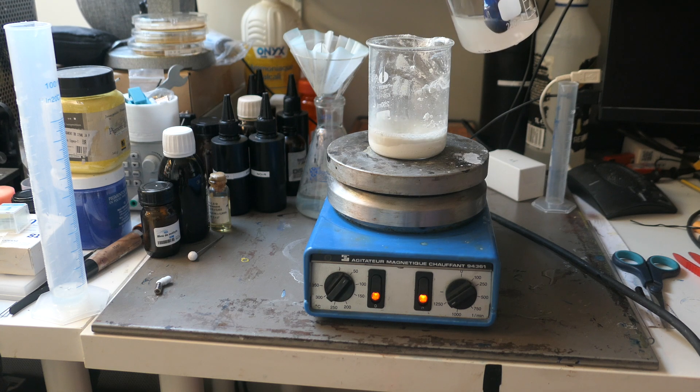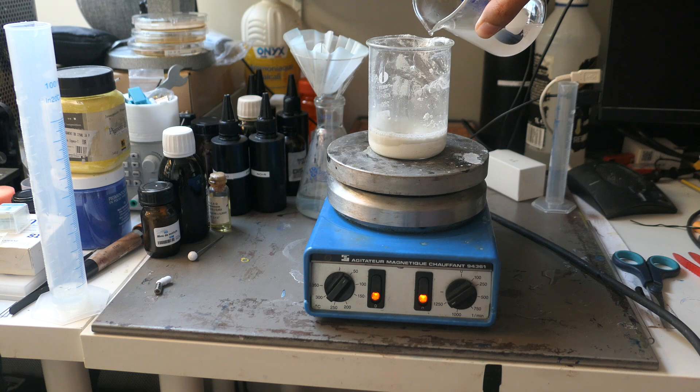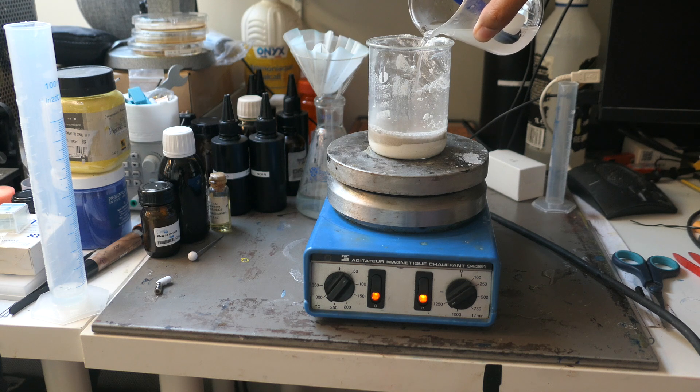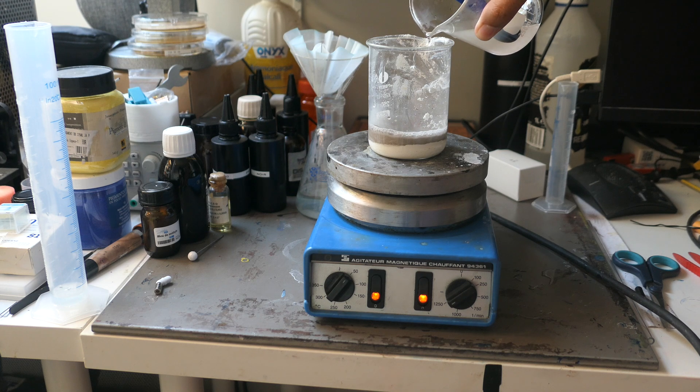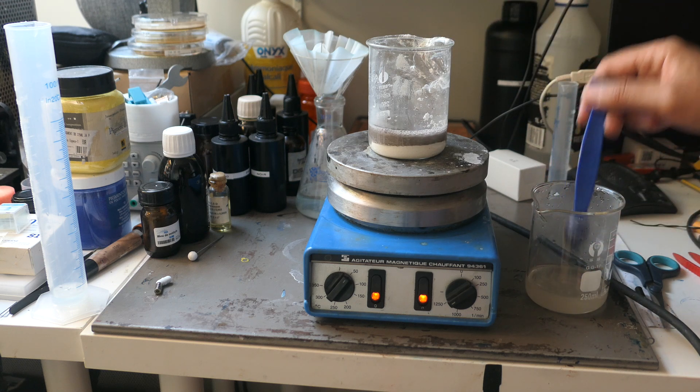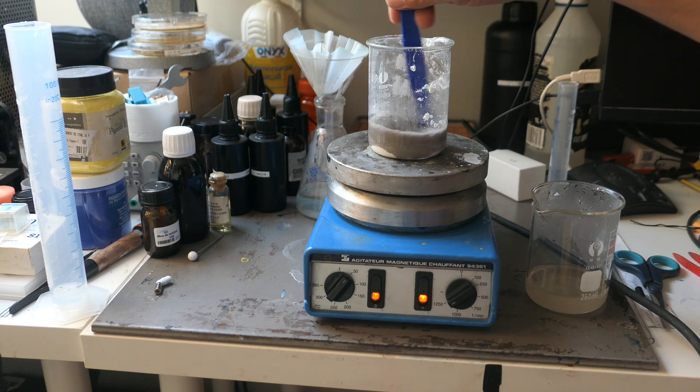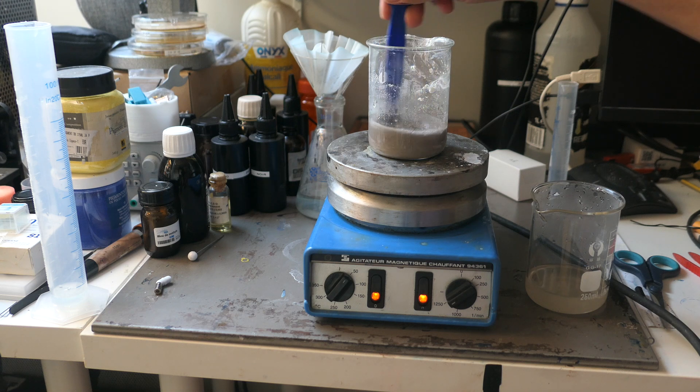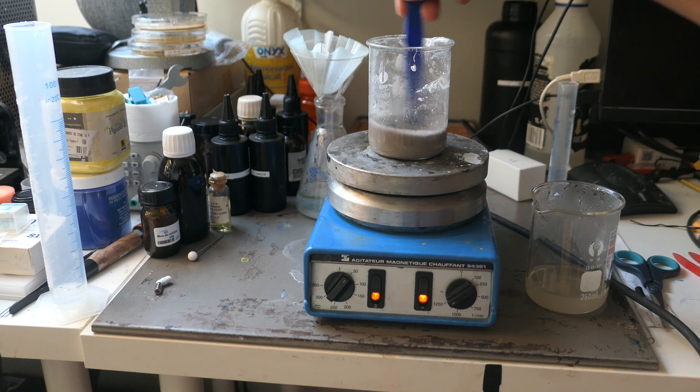Next, we pour this base onto our silver chloride. Again, stir well and heat gently. It's advisable to leave it on for a fairly long time, as the reaction with the solid is not very effective. A yellow-brown silver hydroxide is then formed, which slowly darkens as it decomposes into silver oxide.